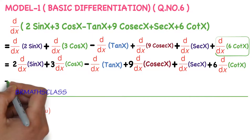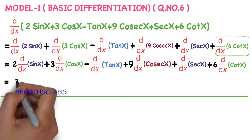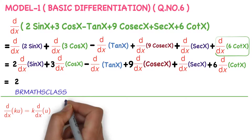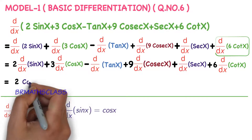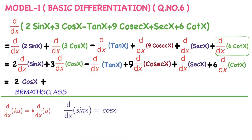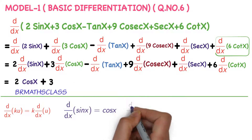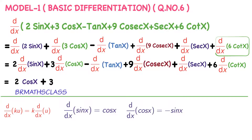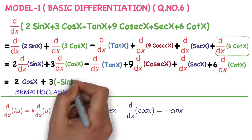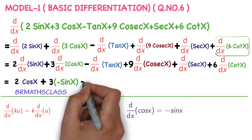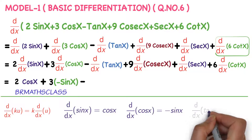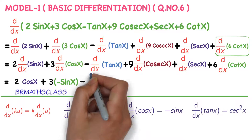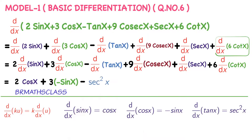In the next step we differentiate each term. 2 into derivative of sin x — you must know this formula: derivative of sin x is cos x — so we get 2 cos x. Plus 3 into derivative of cos x: derivative of cos x is minus sin x. The main intention of this problem is to revise the formulas. Then, derivative of tan x is secant square x.